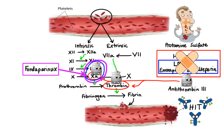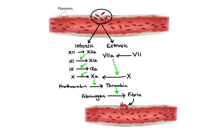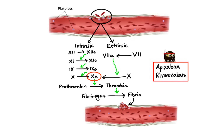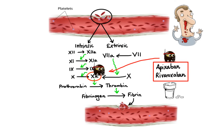Let's move on to direct inhibitors of factor Xa. Agents that belong to this group are apixaban and rivaroxaban. The mechanism of action is straightforward — they both bind directly to the active site of factor Xa, thus preventing it from converting prothrombin to thrombin. The biggest advantage of these agents over other anticoagulants is that they are available in oral formulation. Unfortunately, bleeding is still a major risk and a specific antidote is currently not available.